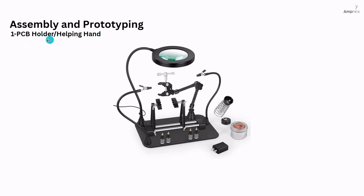Assembly and prototyping. Number one: PCB holder or helping hand. A PCB holder or helping hand is a tool with adjustable arms and clips designed to hold circuit boards or components in place during soldering or inspection. It provides stability and hands-free support, allowing you to work more precisely, especially when soldering small or delicate parts.